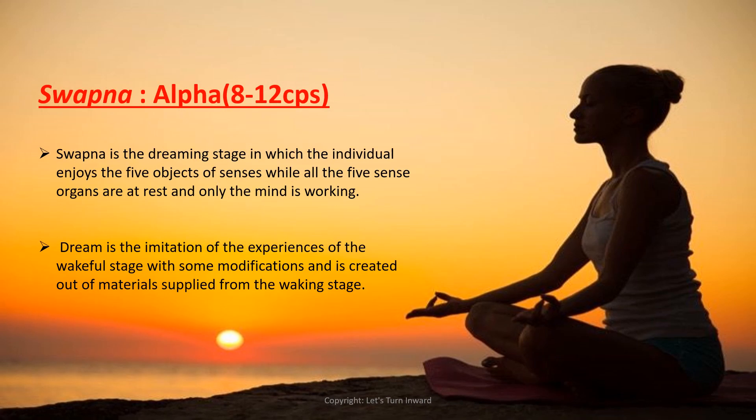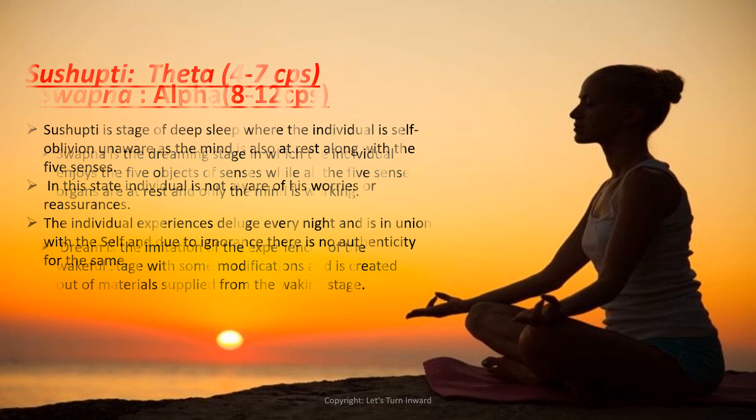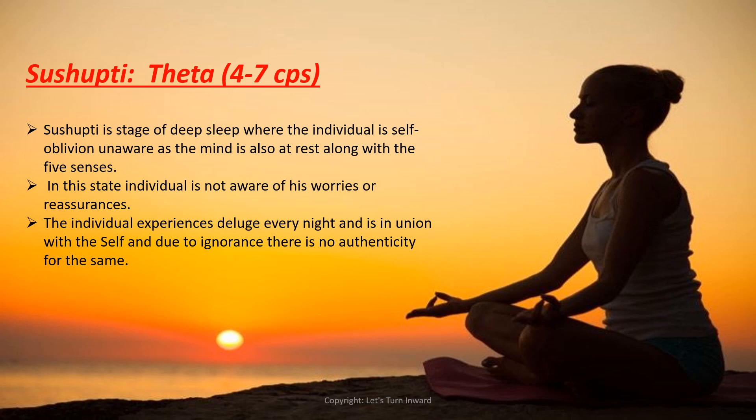The second state is Swapna, the dreaming state, also known as the alpha state. In this state, the five senses are at rest but the mind is still working. The mind modifies the material supplied from the Jagriti, or wakeful, state.